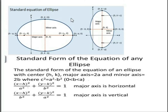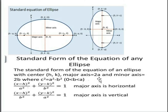Standard equation of an ellipse: here the horizontal ellipse has the major axis along the x-axis and the vertical ellipse has the major axis along the y-axis. The standard equation of the ellipse with center (h, k), major axis 2a, and minor axis 2b, where c² = a² − b², is: (x − h)² / a² + (y − k)² / b² = 1.